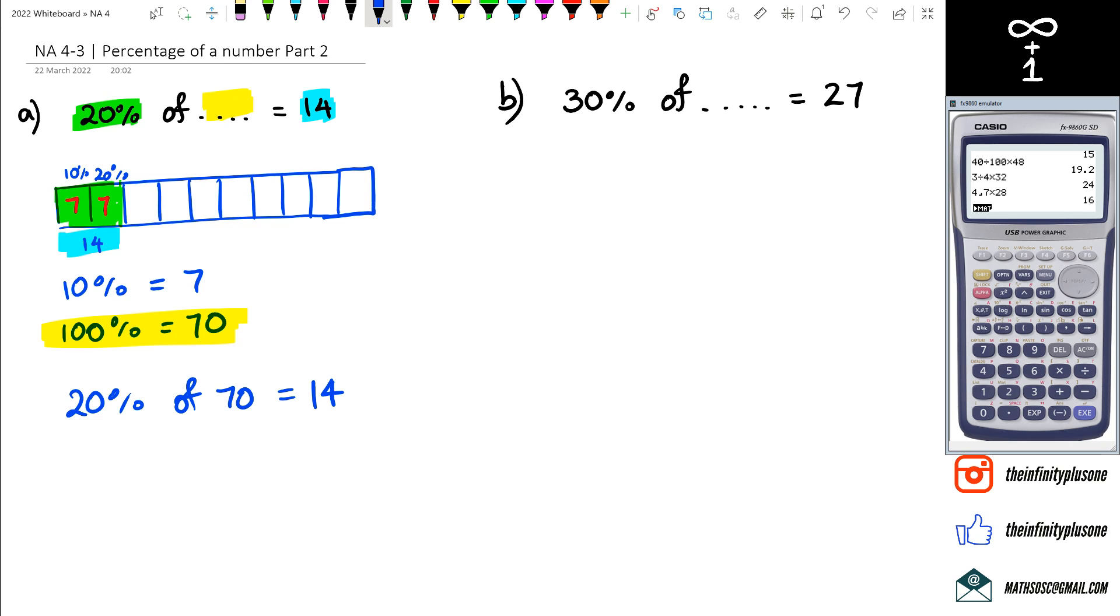So basically what we're doing is we're going 14 divided by 2, and then we're actually multiplying it by 100. So 14 divided by 2 because that's going to give us what each of the green boxes is, and because we've got 10 boxes we're going to multiply it by 10 to get 70.